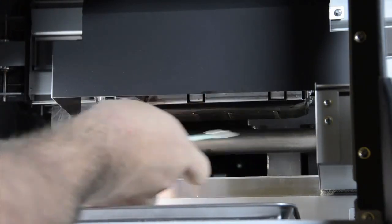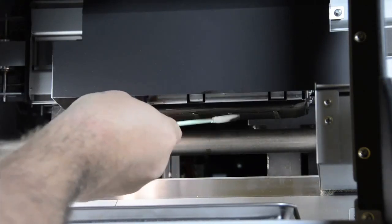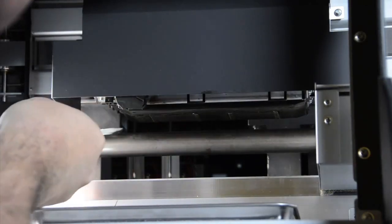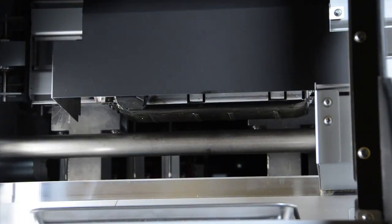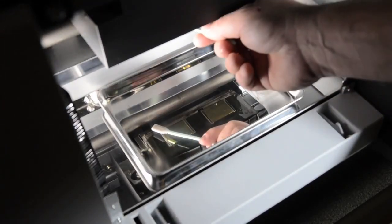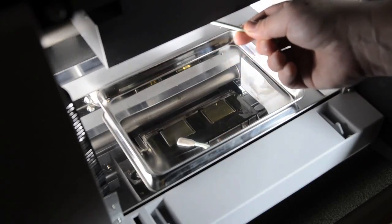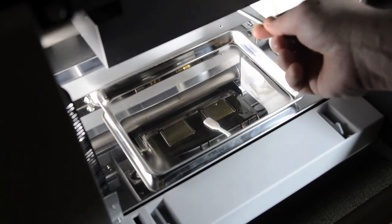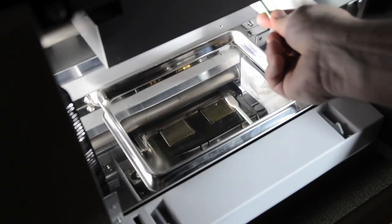And again, our catch tray is located underneath to catch any excess fluid that might drip off the head so it does not go into the machine. In a different view, the tray was designed to be able to reflect the print head so you do not have to bend down to look to clean it. You could actually see the reflection of the print head.